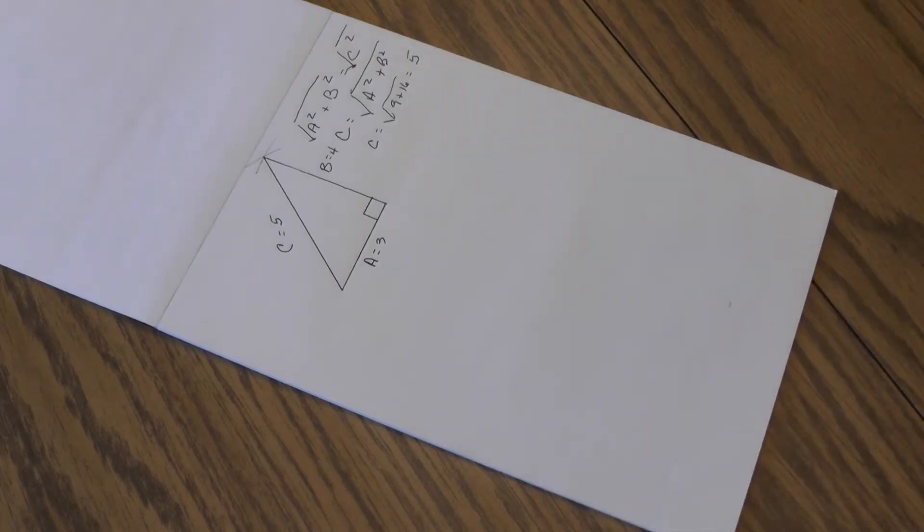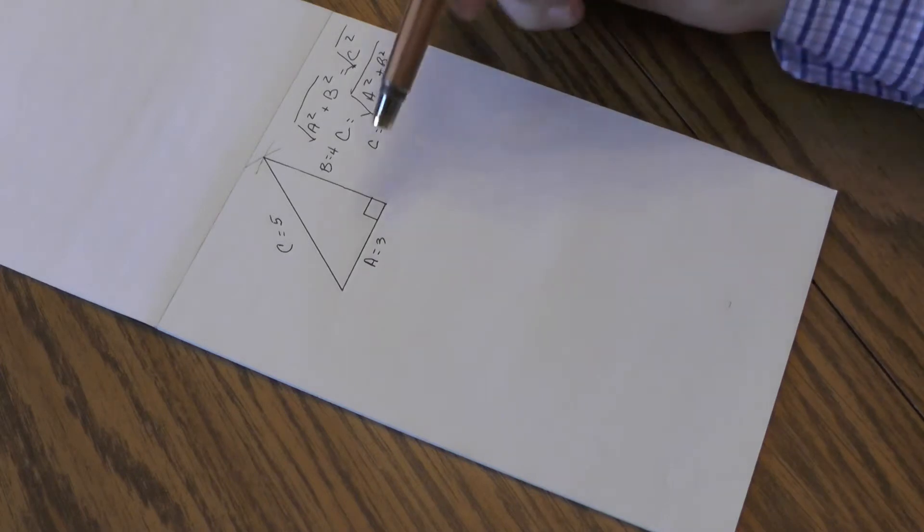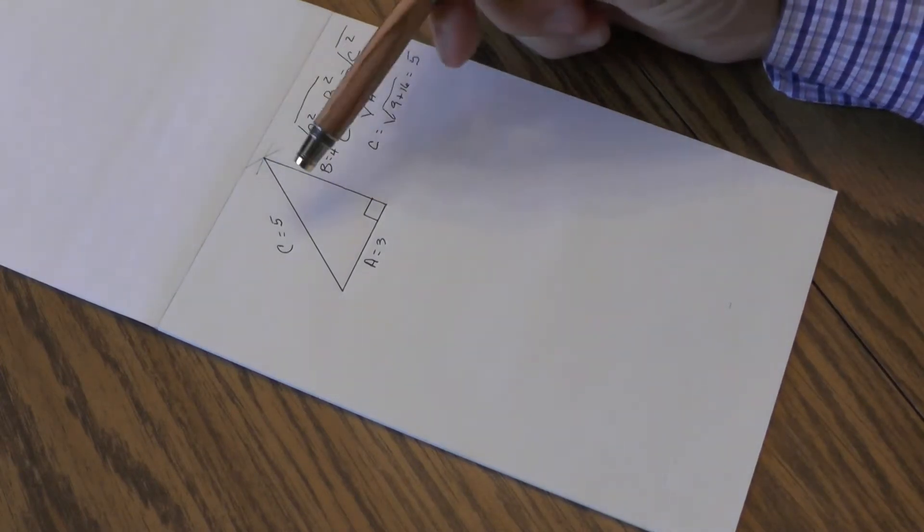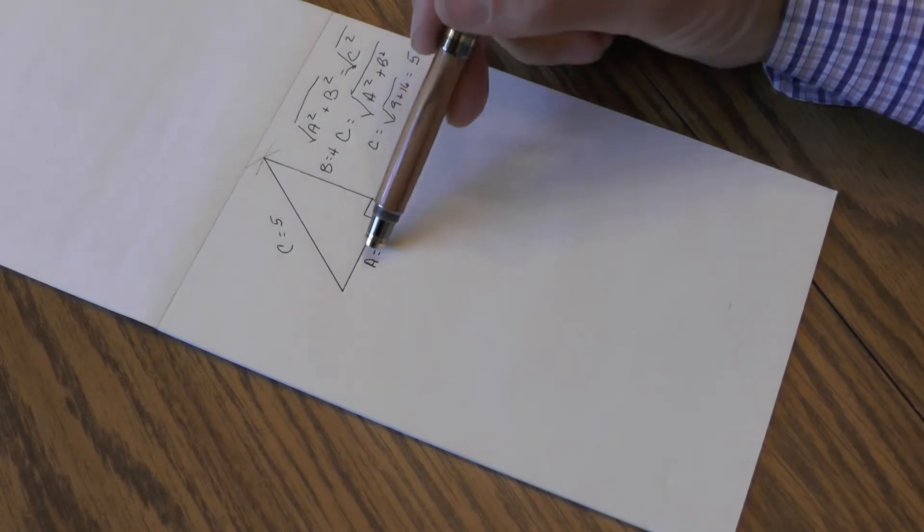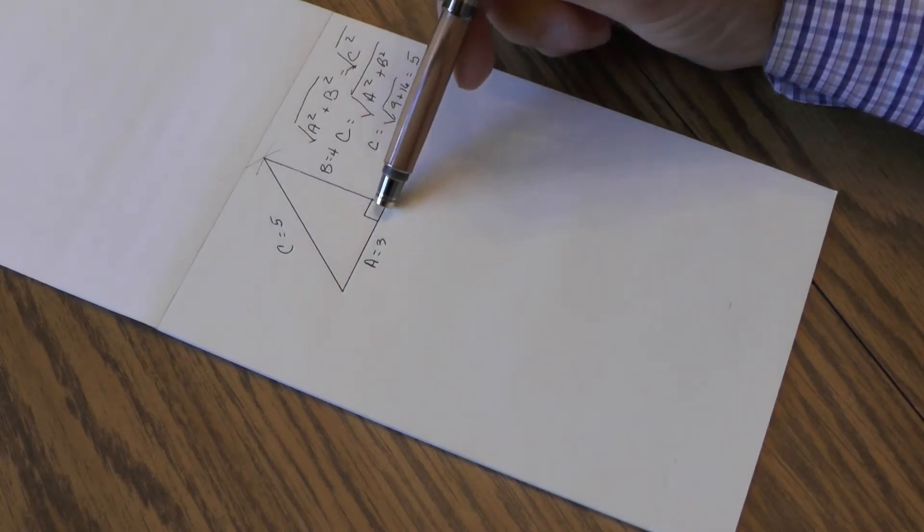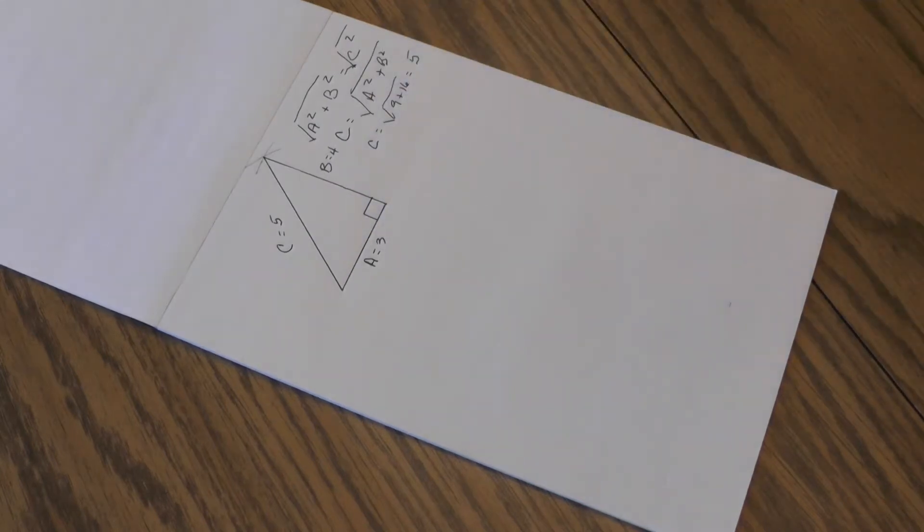So how can this knowledge help us? Well, if we wanted to lay out a series of parallel lines, we know that if we start with the triangle of 3, 4, 5, that this is going to give us a 90 degree angle. So let me demonstrate.